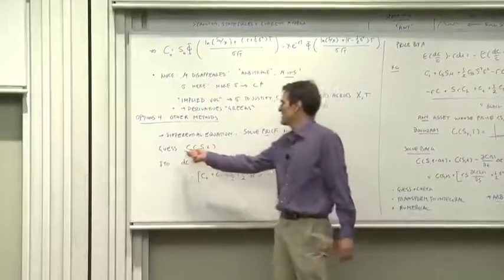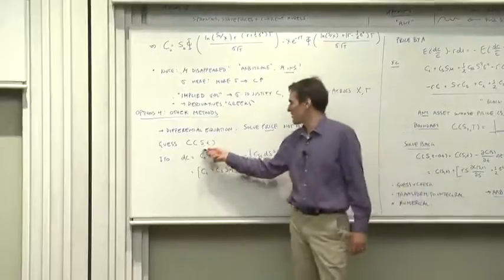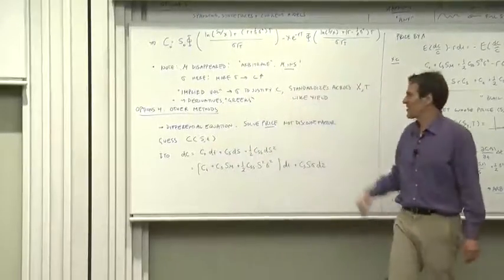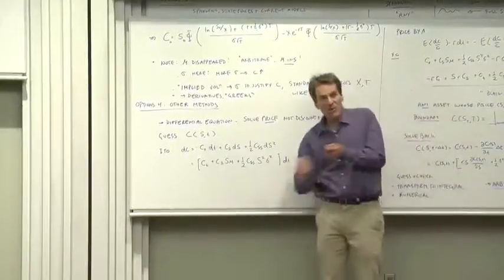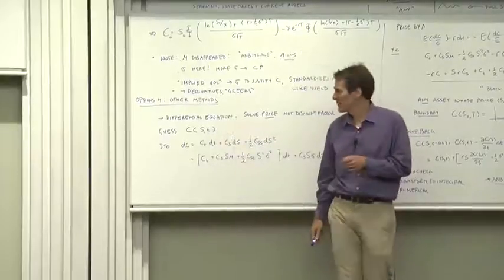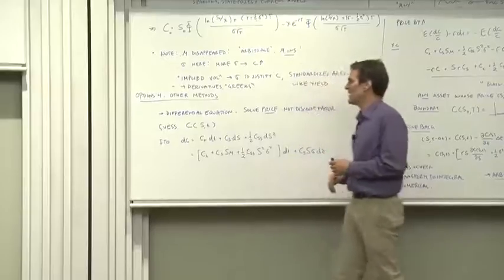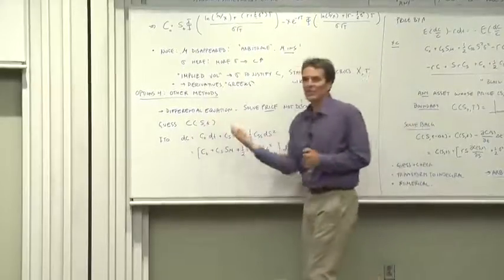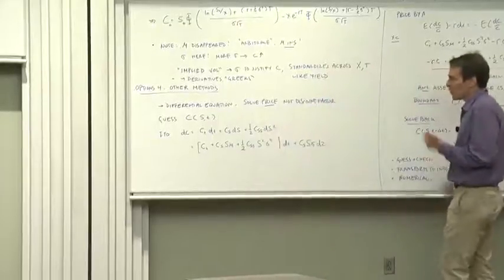How might we go about this problem another way? Let us guess that the call option price when we're all done will be a function of the stock price and time. Interest rate is a parameter, but the only way it varies over its life is as the stock price varies and as time until expiration shrinks. If that's true, then let's apply Ito's lemma. We want to find what that function is once we've guessed that that's what the functional form looks like.